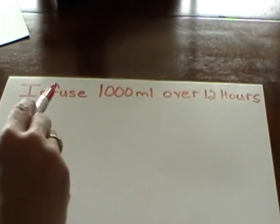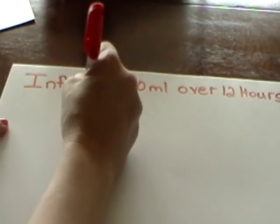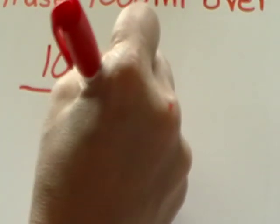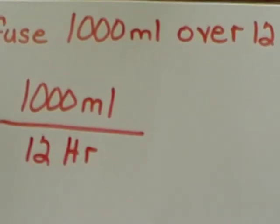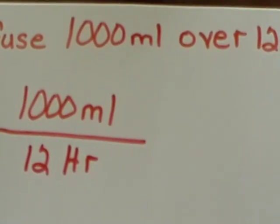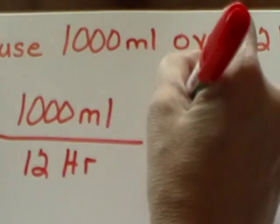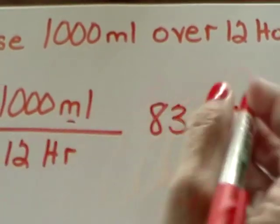You have an order that says infuse 1,000 milliliters over 12 hours. 1,000 milliliters is your volume that goes as your numerator on the top. 12 hours is your denominator that goes on the bottom of the problem. You then take your calculator and say 1,000 divided by 12, which equals 83.33.